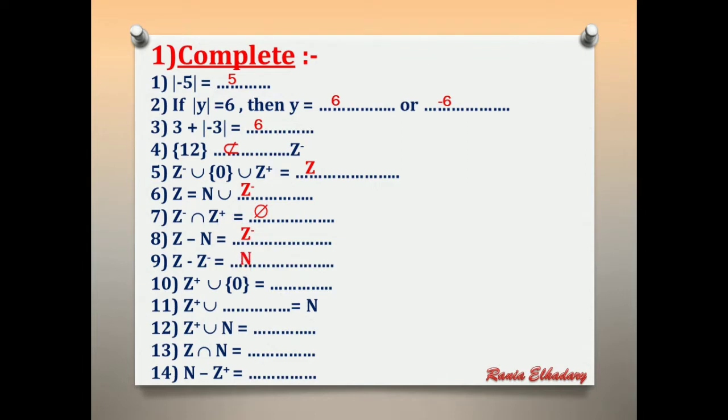Number 10: Z positive union {0}. We have 0, 1, 2, 3, 4 and so on. What is the name of this set? Natural number.